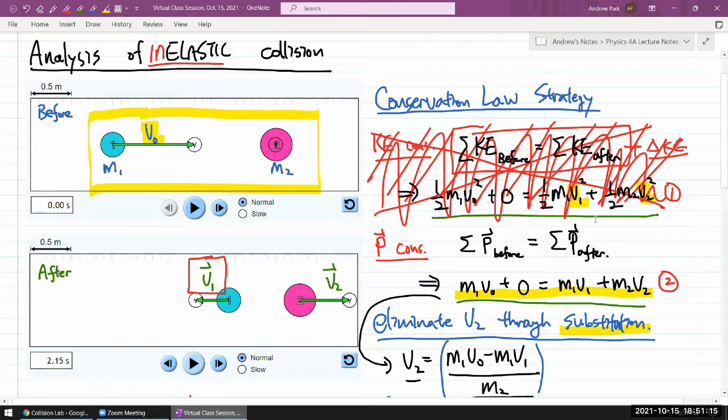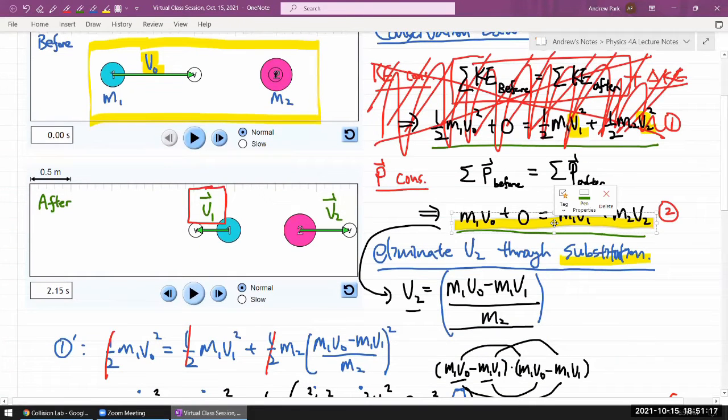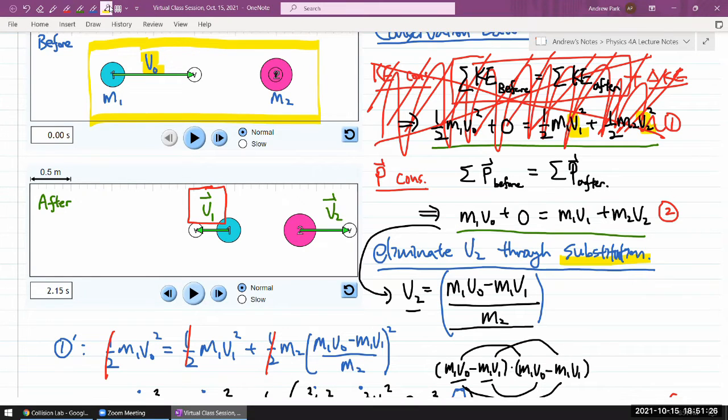Now, with that, if you are looking at conservation of momentum expression, we see that we have an issue. Because we have only one equation remaining, but we still have two unknowns, V1 and V2. So we don't have enough information.